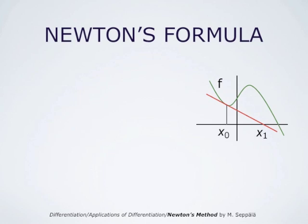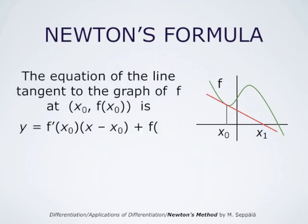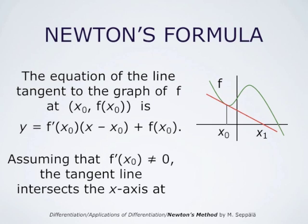How does this work mathematically? The equation of the line tangent to the graph of f at the point (x0, f(x0)) is y = f'(x0)·(x − x0) + f(x0). This is a line with slope f'(x0) passing through (x0, f(x0)). If f'(x0) ≠ 0, then this line is not horizontal and intersects the x-axis at some point. Solving 0 = f'(x0)·(x − x0) + f(x0), we get x1 = x0 − f(x0)/f'(x0).